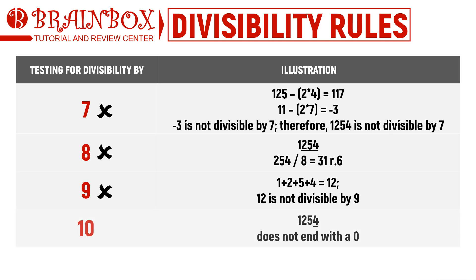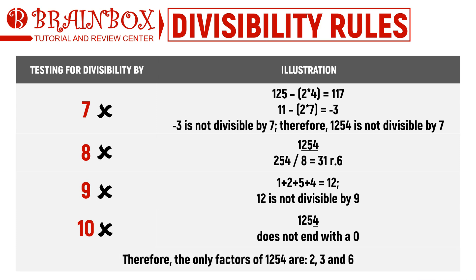Finally, 1,254 is not divisible by 10 because it does not end in a zero. To summarize, the factors of 1,254 between 2 and 10 are 2, 3, and 6.